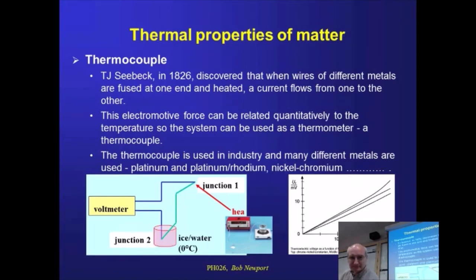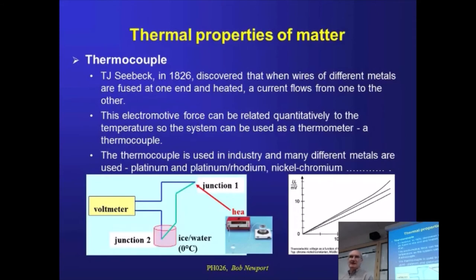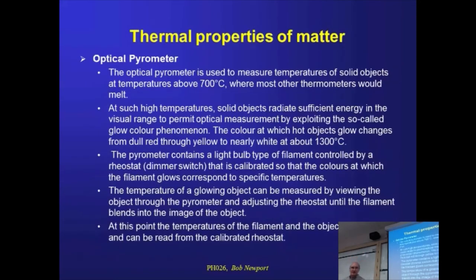That's the thermocouple. We'll come back to it later — in fact, next term — because thermocouples are one way to measure infrared radiation. You take junction 1, flatten it out so it has a relatively large surface area, paint it matte black so it absorbs infrared, and you can use it as an IR detector. The last thermometer I want to look at is the optical pyrometer, which takes us up to really high temperatures. Steelworks use optical pyrometers. Measuring the surface temperature of the sun and other stars is also based on the optical pyrometer.